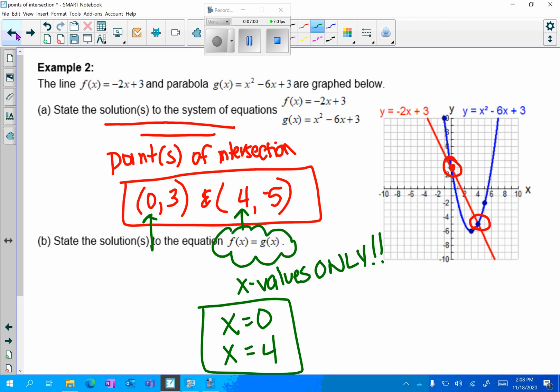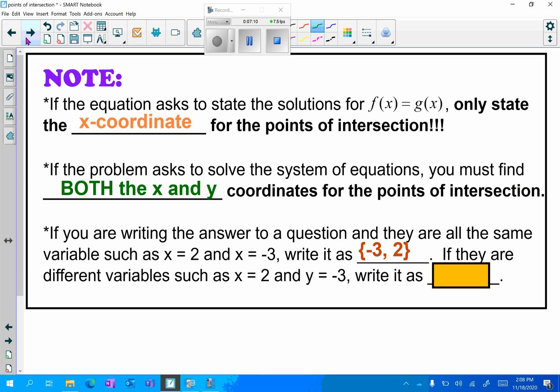If you are writing the answer to a question and they are all the same variable such as x equals 2 and x equals negative 3, we can write it in those curly brackets or set notation. That means that in part b here I could have written this as {0, 4} if I wanted to. But if they are different variables, if they are a coordinate point x equals 2 and y equals negative 3, we write it in parentheses as a coordinate point. Please be careful there. Now both of these examples were done either algebraically or with a graph that was already given to you. You can use your calculator as we've done in the past: y1, y2, and then you can hit the graph button, second trace, choice 5, and find the points of intersection if you need to graphically on your calculator as well.